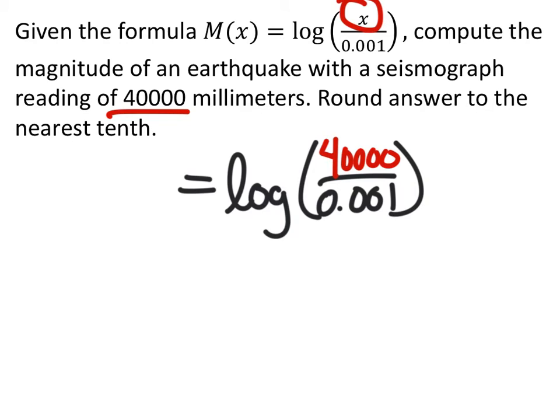And, of course, we can rewrite the expression or the equation as M of 40,000. And from this point, all we're going to do is plug this into a calculator. Some of you guys may have older calculators, in which case you're going to want to put this value in first, 40,000 divided by .001, and then take the log of that.